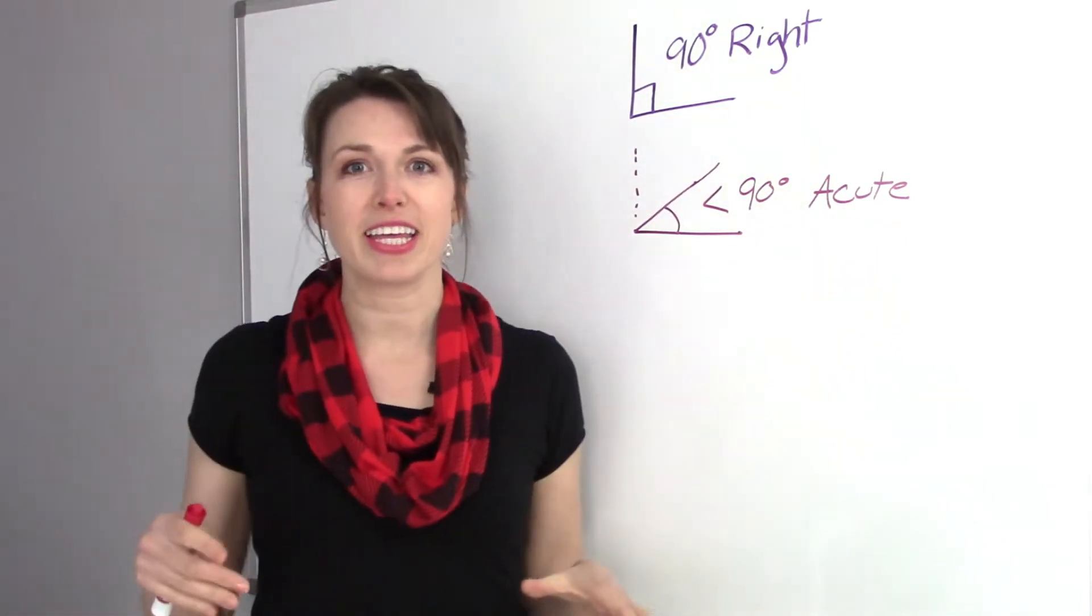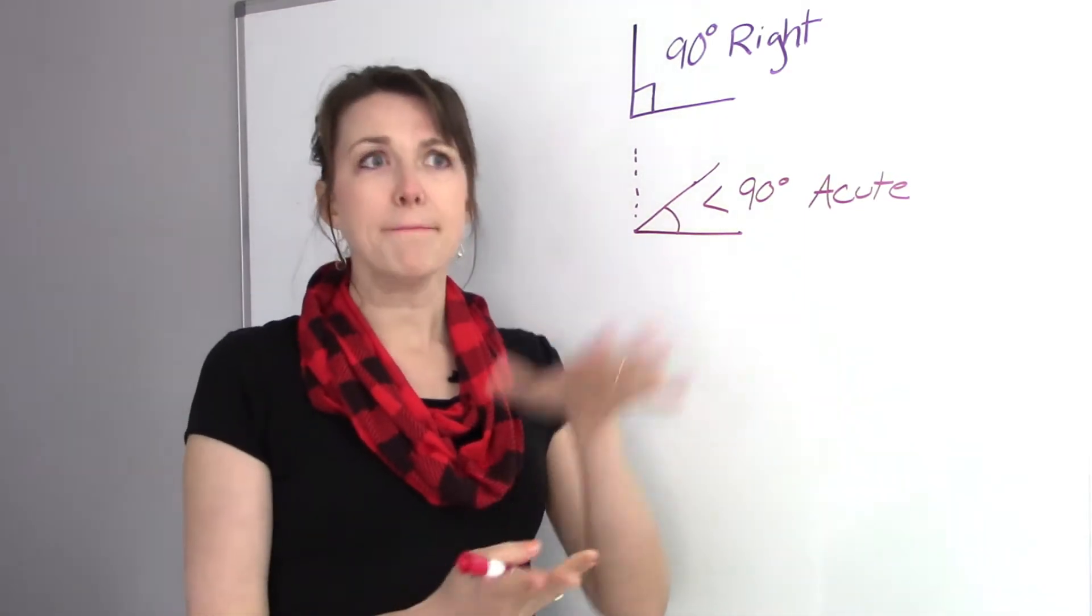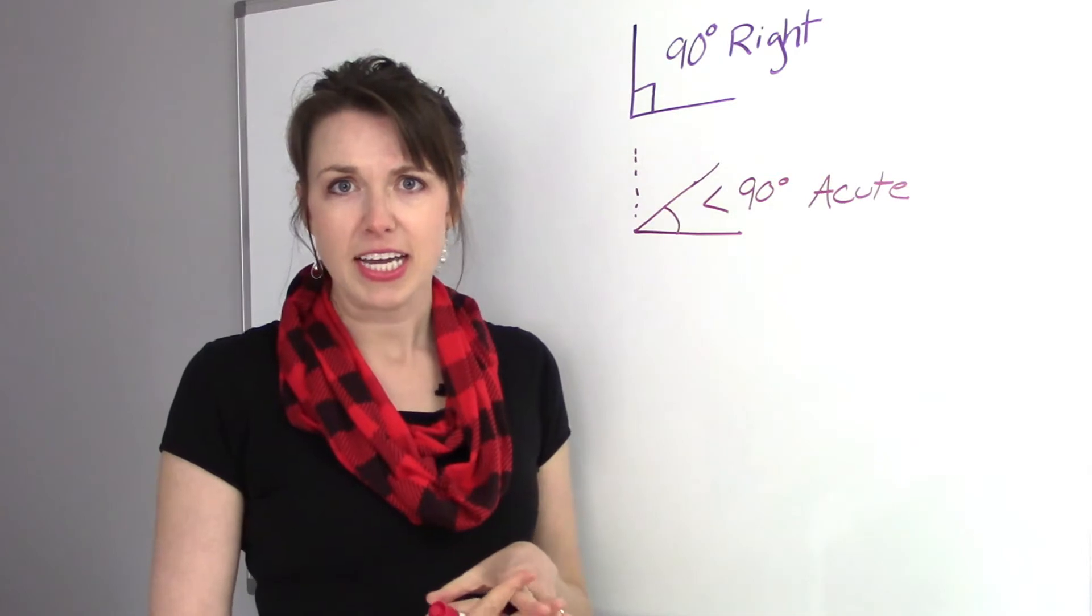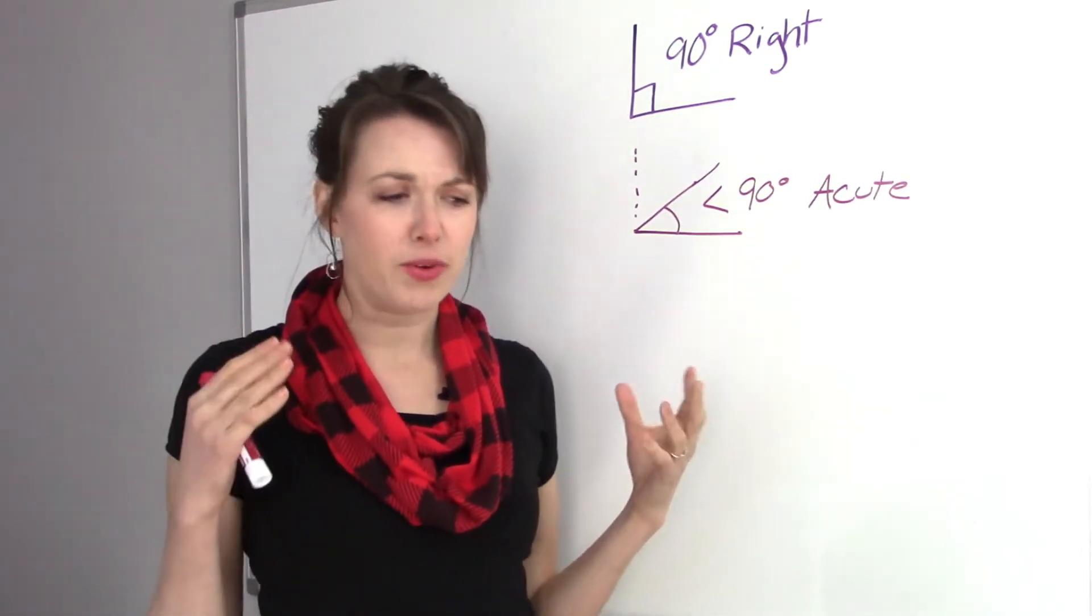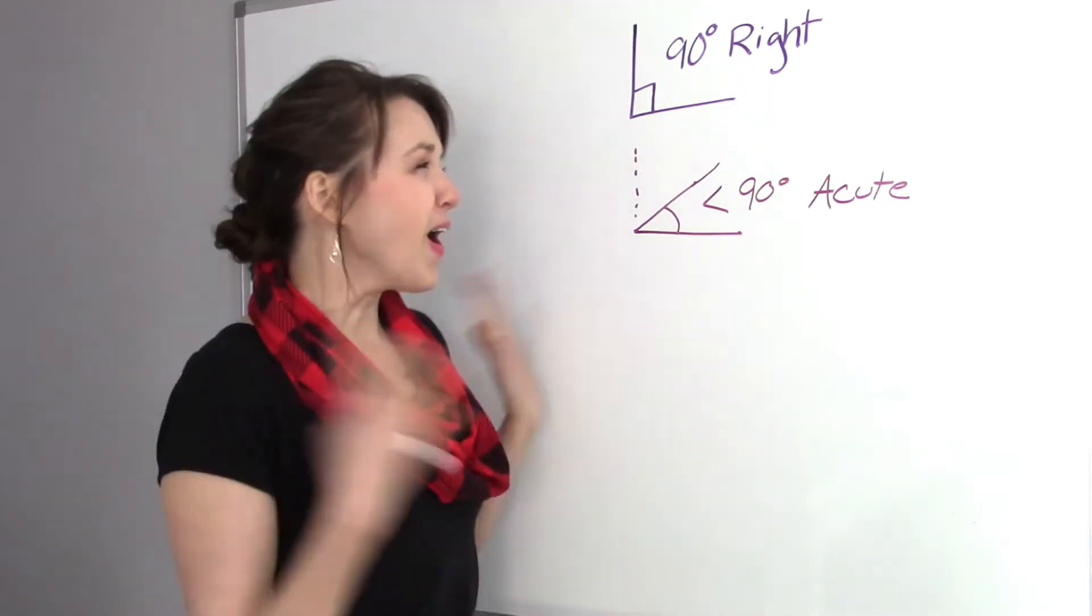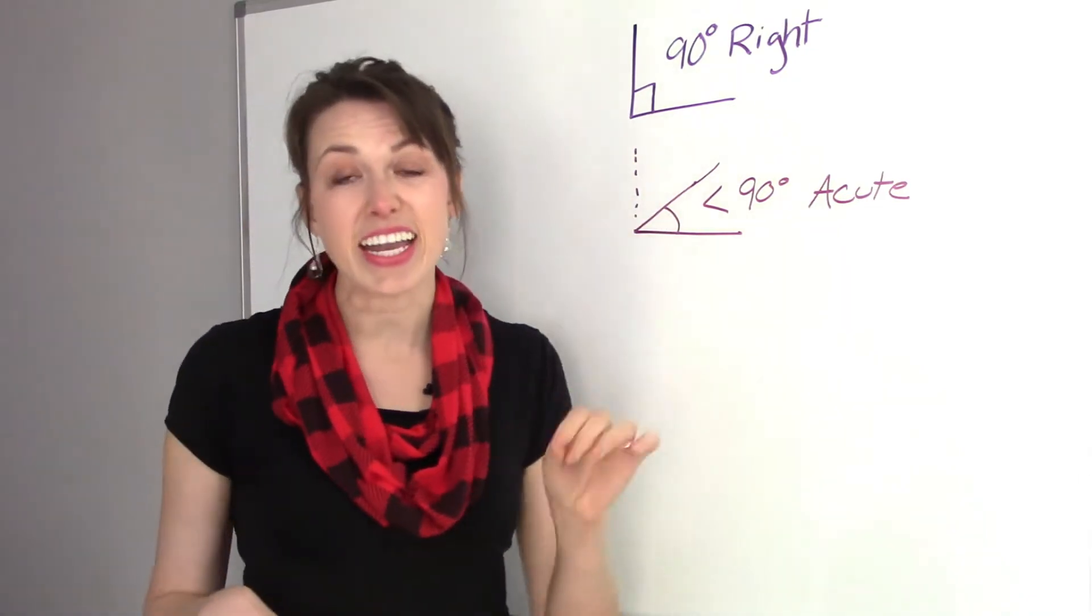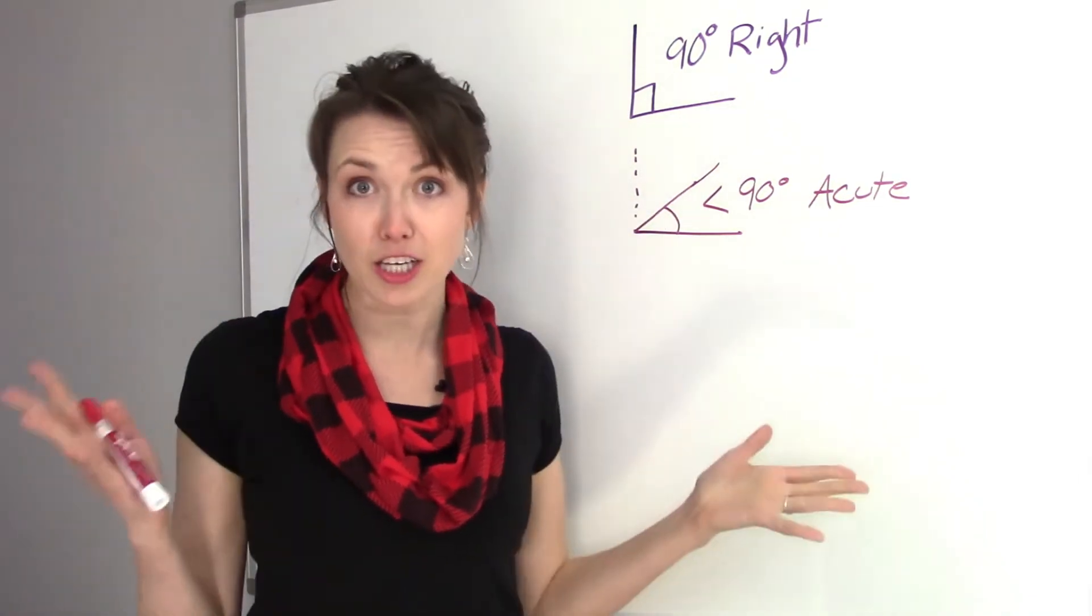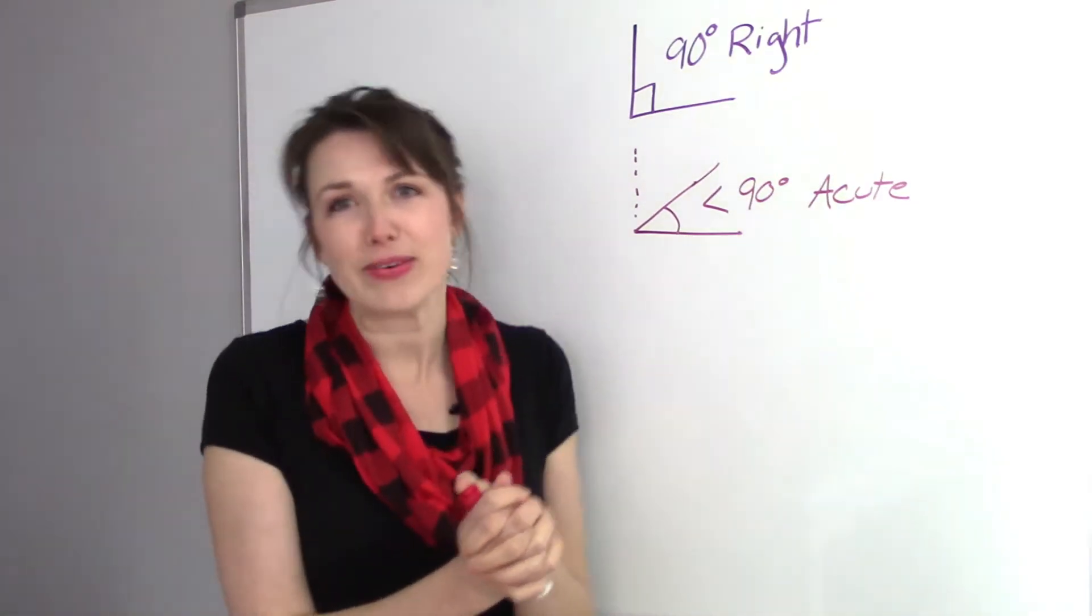So I want you to think about it like this. So when things are small, so think about like babies, or bunnies, or kittens, right? They're so cute. And so sometimes when we say cute, we're like, oh, it's so cute. So I want you to do that. I want you to say, oh, it's a cute little angle. And that is a mnemonic device that's going to help you remember that acute means little and adorable and just so cute.